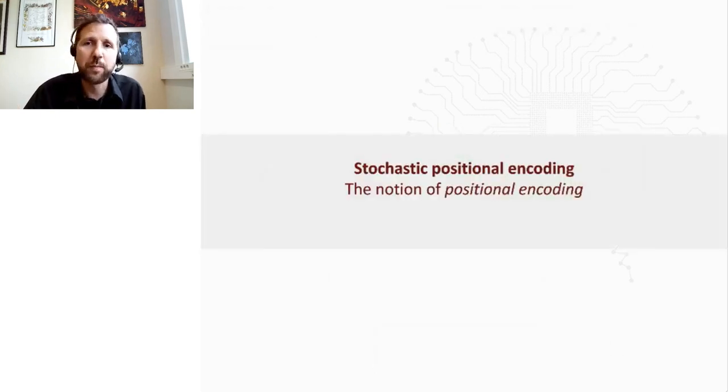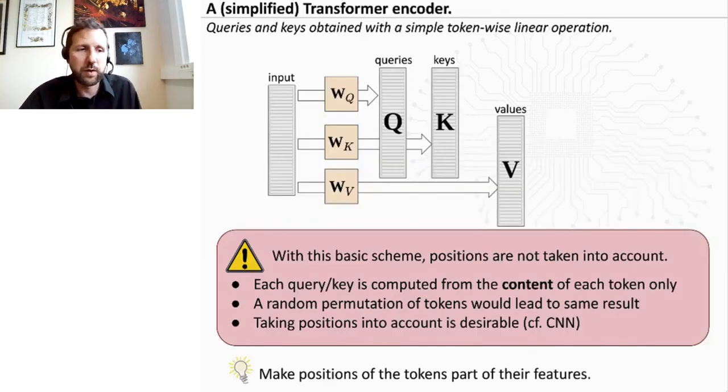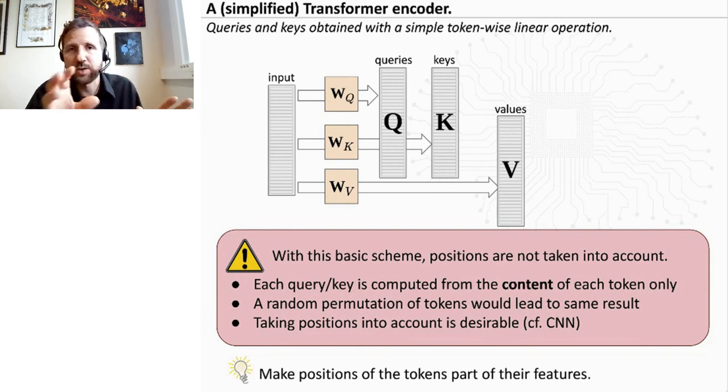The second thing I want to talk about is positional encoding. So if we just do, as I said, so we take each input and we apply some linear transformation to get the queries, the keys and the values, we realize that all of these features are just computed from the content of each token. And we are totally ignoring the positions of each token. And it means that if we did shuffle the input randomly, the output would be the same up to this permutation. So it's a bit weird, because the fact is we would expect to actually take the positions into account for computation. So think of a CNN. We know that each output should be computed using the neighborhood, for instance.